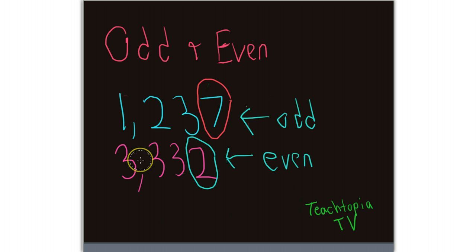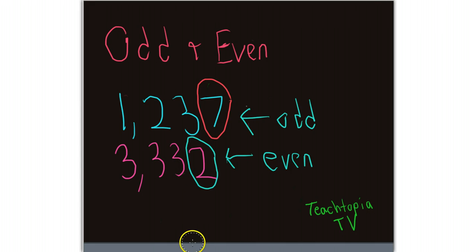Let's do our 2, 4, 6, 8 thing again: 2, 4, 6, 8 — who do we appreciate? Plus 0 is always going to be even. And 1, 3, 5, 7, and 9 is always going to be odd. This was Teachtopia TV with a brief tutorial on odd and even numbers.